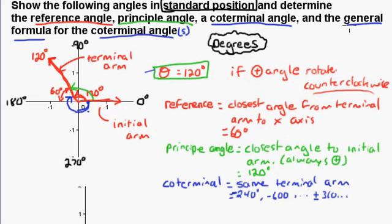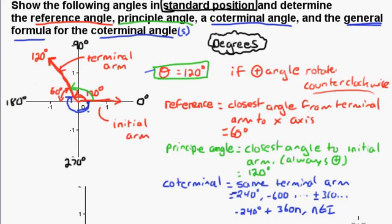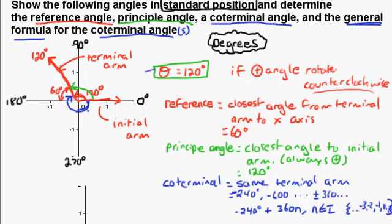There's a general formula for coterminal angles. The general formula is negative 240 degrees plus 360n, because we're adding a full rotation n times to get to the next terminal arm. You could do it once, twice, three times, or even negative times, but n always has to be an integer. Integers are the numbers dot dot dot negative 3, negative 2, negative 1, 0, 1, 2, dot dot dot — any whole number.